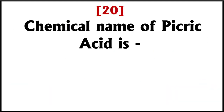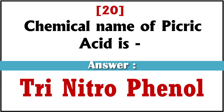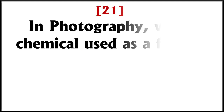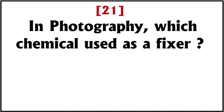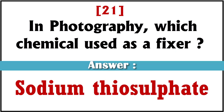Chemical name of picric acid is? Answer: trinitrophenol. In photography, which chemical is used as a fixer? Answer: sodium thiosulfate.